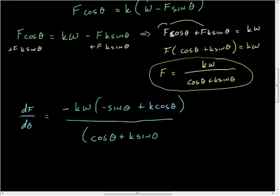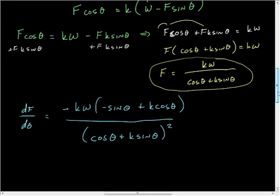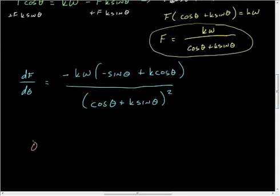Now if we're looking for a minimum or maximum, then they can only occur at the critical points, which means that our derivative is zero or undefined. And I'm not too worried about it being undefined at this particular moment. And so we're just going to take a look at the top here, and that's negative K W times K cosine theta minus sine theta.